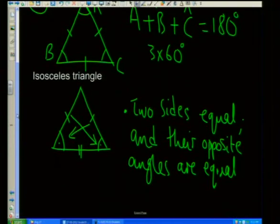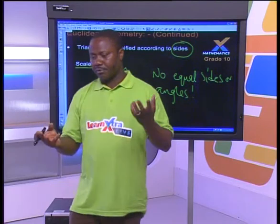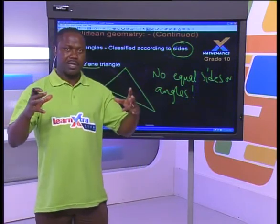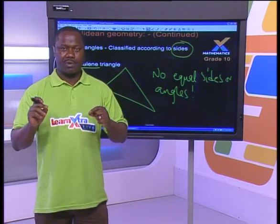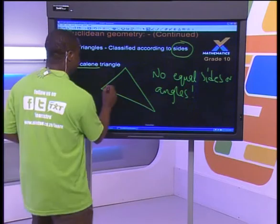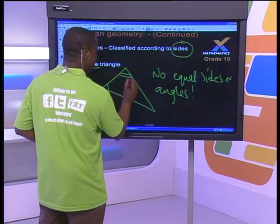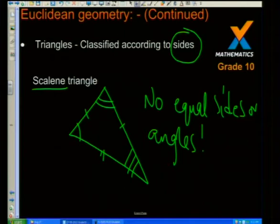So we've done equilateral triangle and isosceles triangle, and I started with the scalene triangle. For equilateral, we had three sides equal. For isosceles, it was two sides equal. For scalene, there's nothing equal — no equal sides, no equal angles. The sides are all different and the angles are all different — that's all I can say about that triangle.